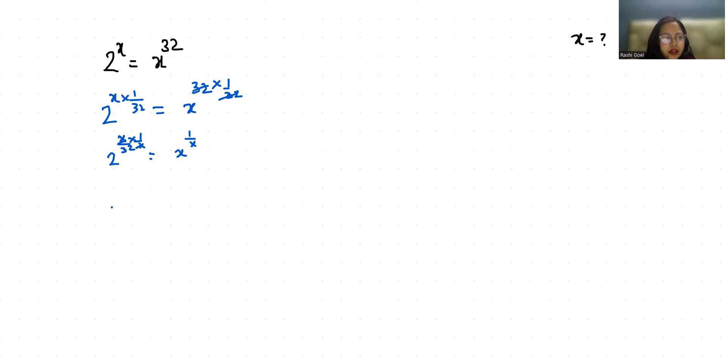So 2 power 1 by 32 equals x power 1 by x.